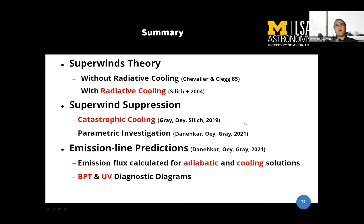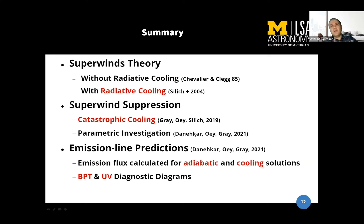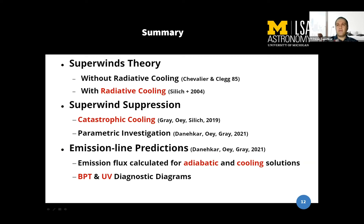This is the summary of my talk. I discussed how we did hydrodynamic simulations analytically solved by Chevalier and Clegg. We also included radiative cooling using the analytic solution developed by Silich in 2004. We did parametric investigations of catastrophic coolings by changing metallicity, mass loss rate, and wind velocity. We find that at higher metallicity and low velocity, there is formation of strong radiative coolings. Using the Cloudy model, I produced BPT diagrams and UV diagnostic diagrams to help identify which regions have catastrophic coolings. Thank you. If you have any questions, I can answer.